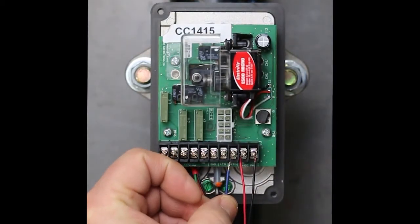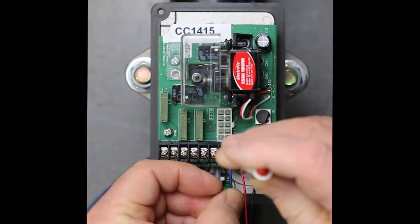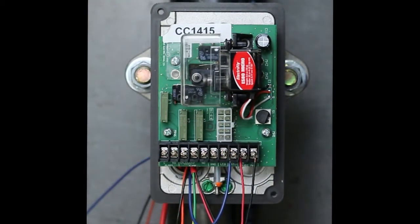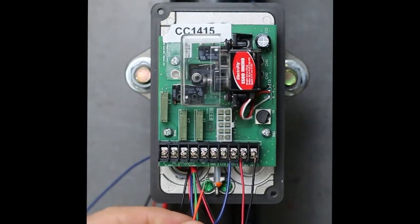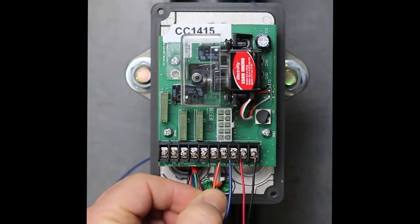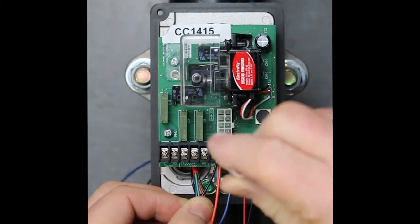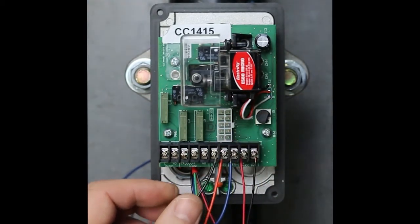The next terminals are for the ATC test switch. The blue wire from the ATC goes to the terminal marked switch. The orange wire from the ATC goes to the terminal marked LED to light the status LED in the ATC test switch. The black wire from the ATC goes to the terminal marked ground.